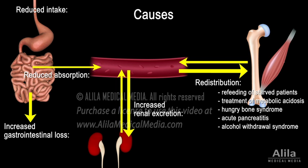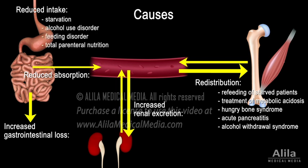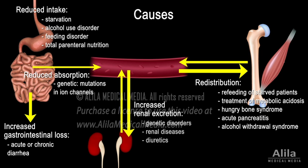Hypomagnesemia due to reduced dietary intake may occur in starvation, alcohol use disorder, feeding disorder, or in those who receive total parenteral nutrition. Reduced intestinal absorption is typically caused by mutations in an ion channel responsible for magnesium transport in the small intestine. Increased gastrointestinal loss of magnesium may happen in acute or chronic diarrhea. Increased renal loss may be caused by genetic disorders, renal diseases, or diuretics that reduce magnesium reabsorption in the kidney.